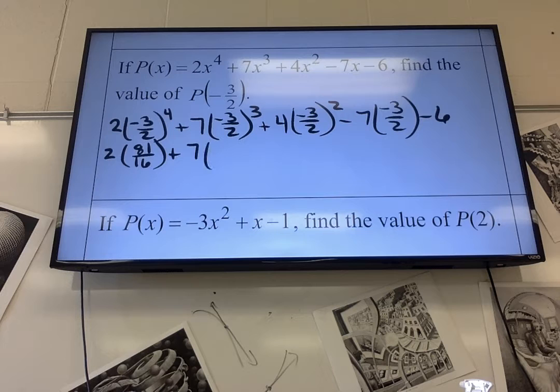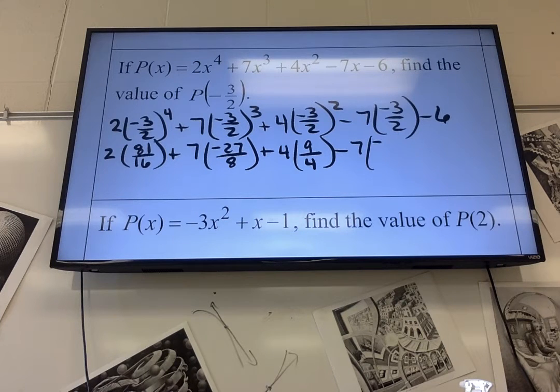The next one is going to be negative because it's an odd exponent. So, negative 3 to the 3rd is negative 27. And, 2 to the 3rd is 8. Negative 3 squared, that's 9. And, 2 squared is 4.